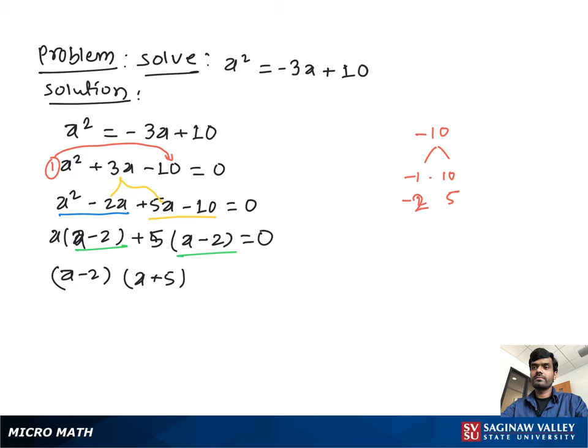Multiplying these two terms gives us 0, so we set each term equal to 0: a-2=0 or a+5=0.